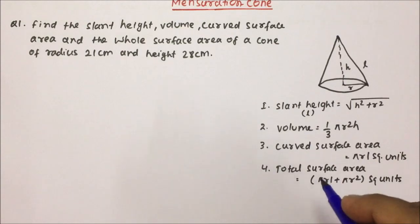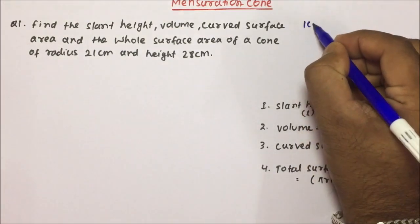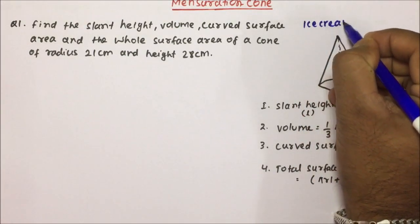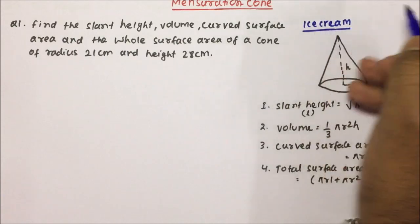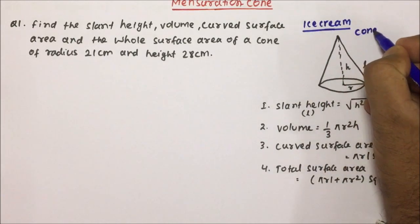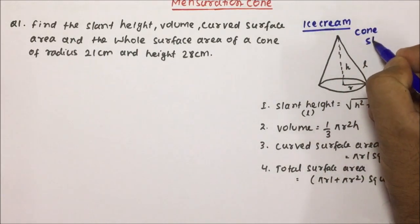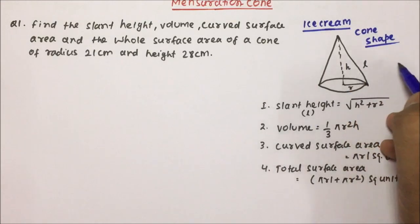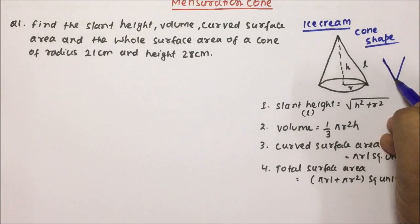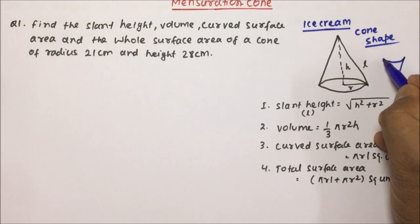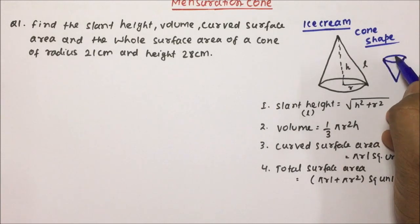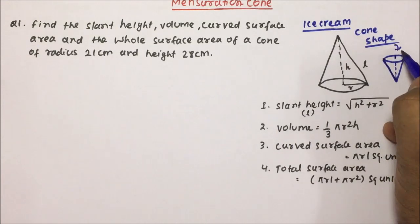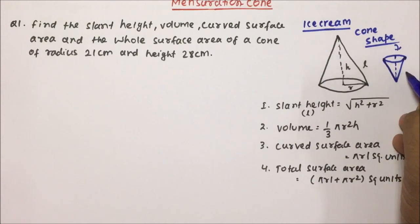You might have seen or eaten ice cream. The ice cream shape is nothing but a cone shape. If you make the diagram inverted, it will look something like that — and that shape is nothing but the cone, which is why we call it a cone ice cream.